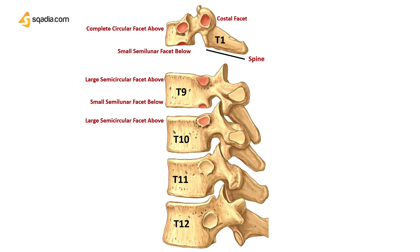In the 11th thoracic vertebra, the costal facet is encroaching on the pedicle, and the transverse processes do not have articular facets.